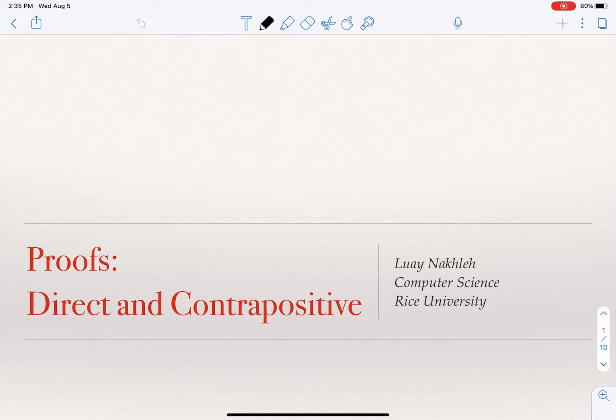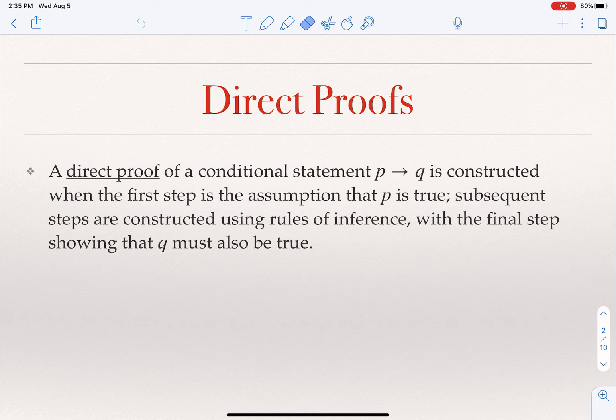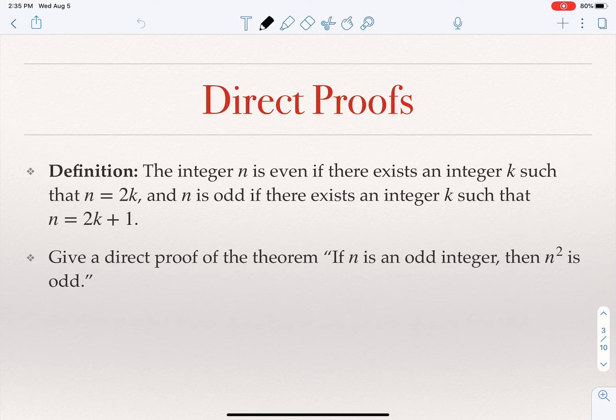The two techniques are called direct proof and contrapositive, and they are very simple really. Direct proof: suppose I want to prove a statement of the form p implies q. The direct proof is: assume p is true and show that q is true. So you go after it in a direct way — the statement is 'if p then q,' so assume p is true and go after q, try to establish it.